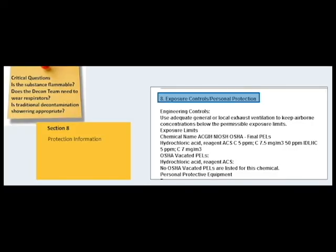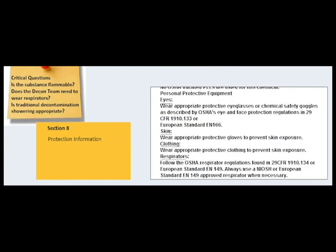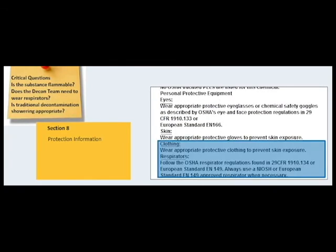Section 8, Protection Information: This section is key for Jamie to review since it provides guidance on PPE. In a quick glance, she learns that the decon team must wear chemical protective clothing and a respirator. The PPE routinely worn by the decon team should provide adequate protection, and Jamie passes this information on to the decon unit leader.